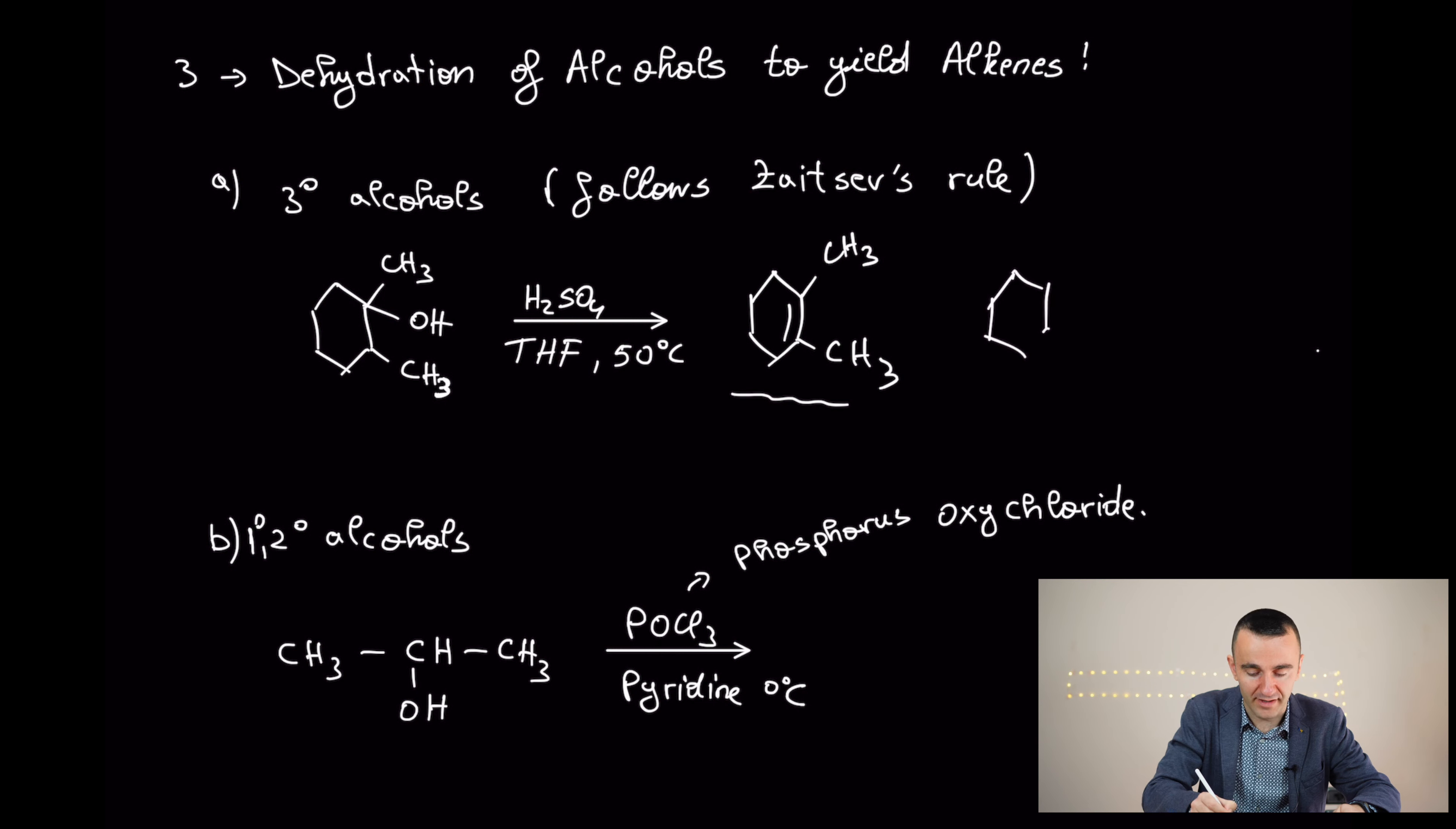And this is going to be the major product. You're going to have also those products, but they are minor. Right? But this one is the major product according to Zaitsev rule, to the more substituted carbon.